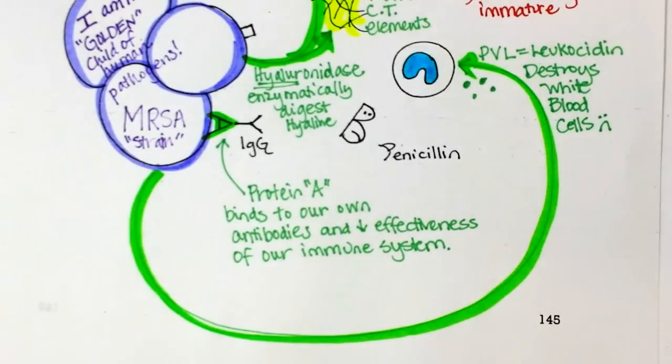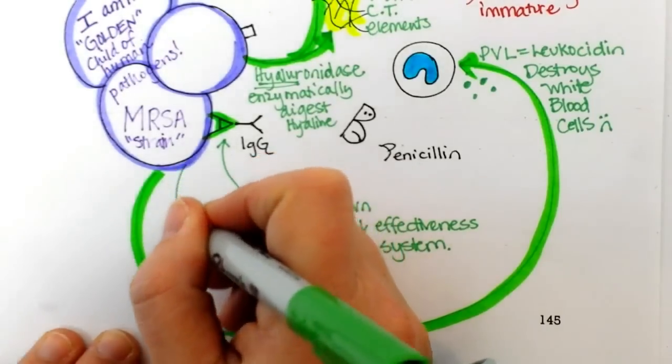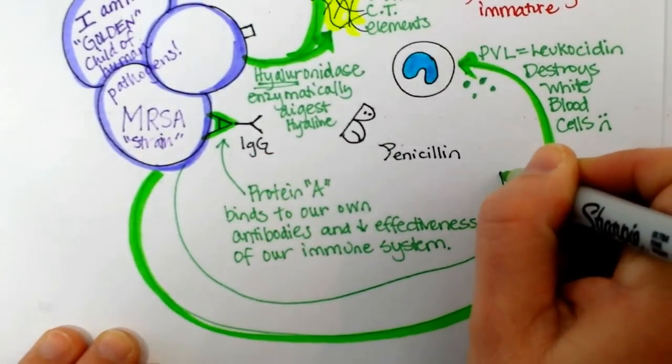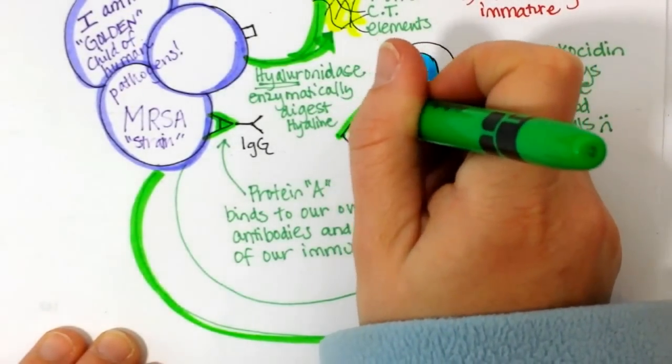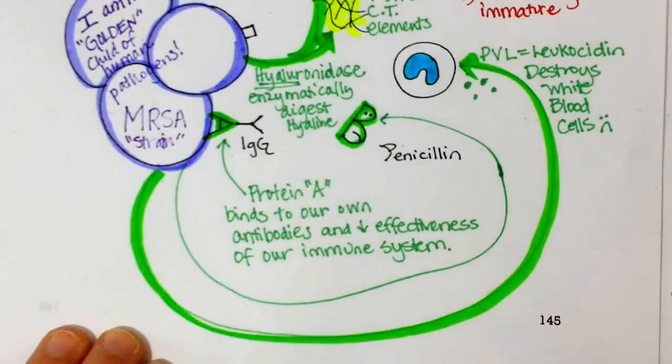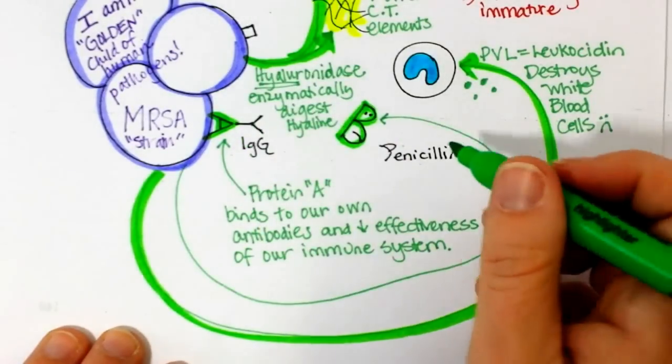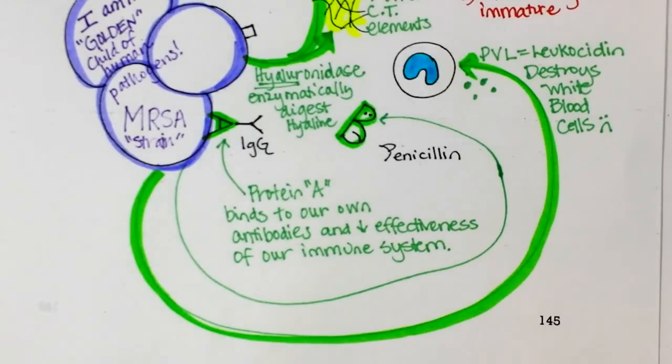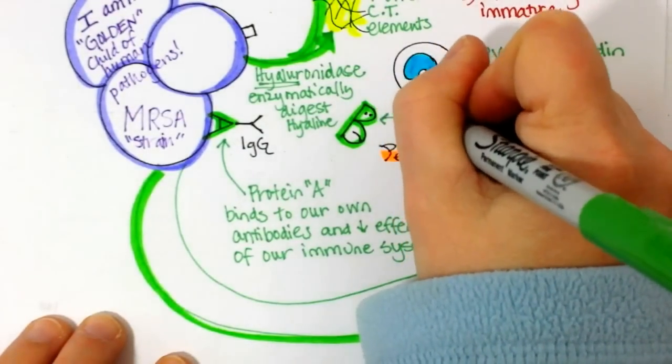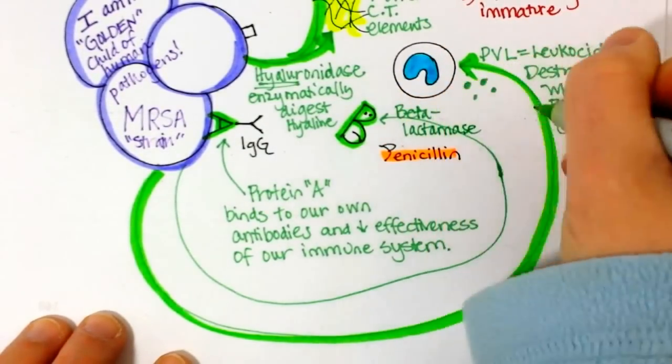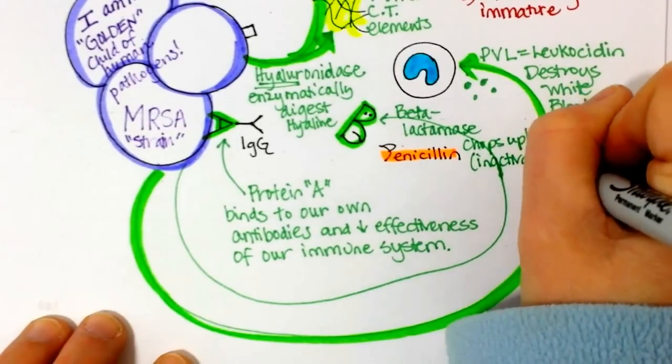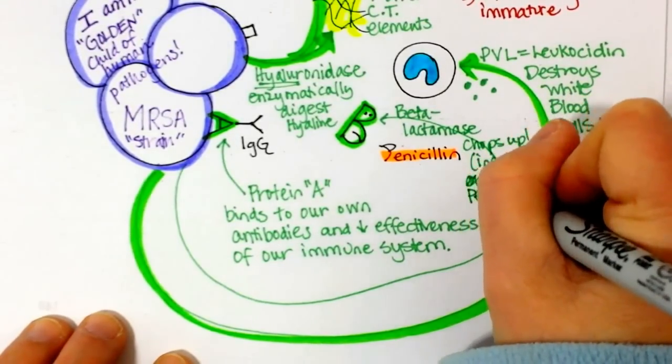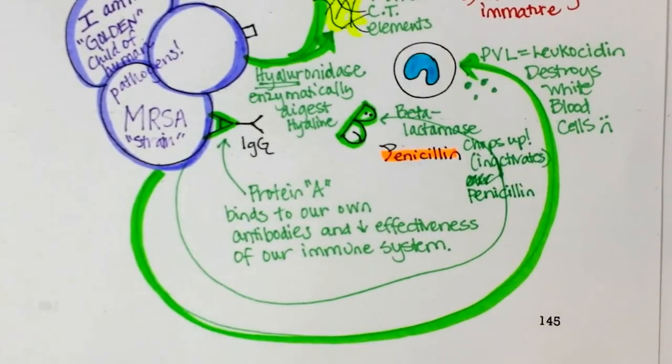And then the last that I'll put on here is the beta-lactamase. And I made a little B here for it. So this stands for beta-lactamase. Which is a characteristic enzyme that most staphs can make. Staph aureuses can make. And they use it to chop up penicillin. So let's make the penicillin in orange. Chop, chop. So beta-lactamase chops up or inactivates penicillin. And this is why most staph aureus strains are resistant to penicillin. Because it can make this enzyme.